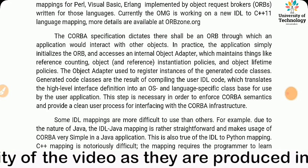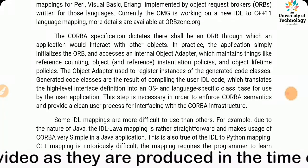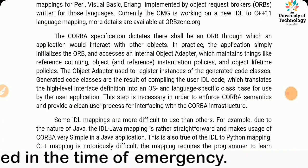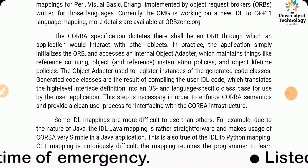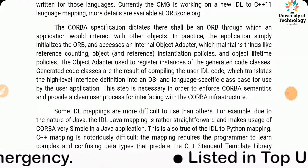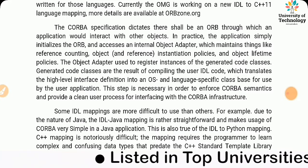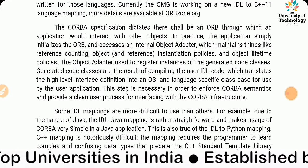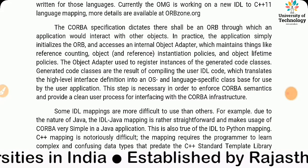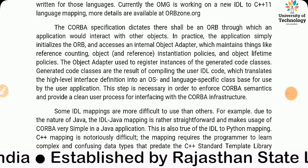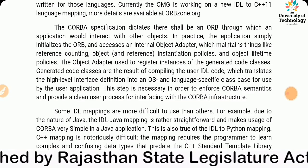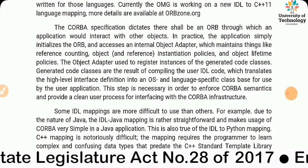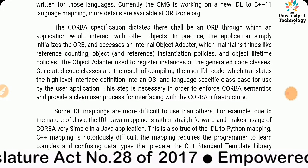In practice, the application simply initializes the ORB and accesses an internal object adapter, which maintains things like reference counting, object and reference instantiation policy, and object lifetime policies. The object adapter is used to register instances of the generated code classes.